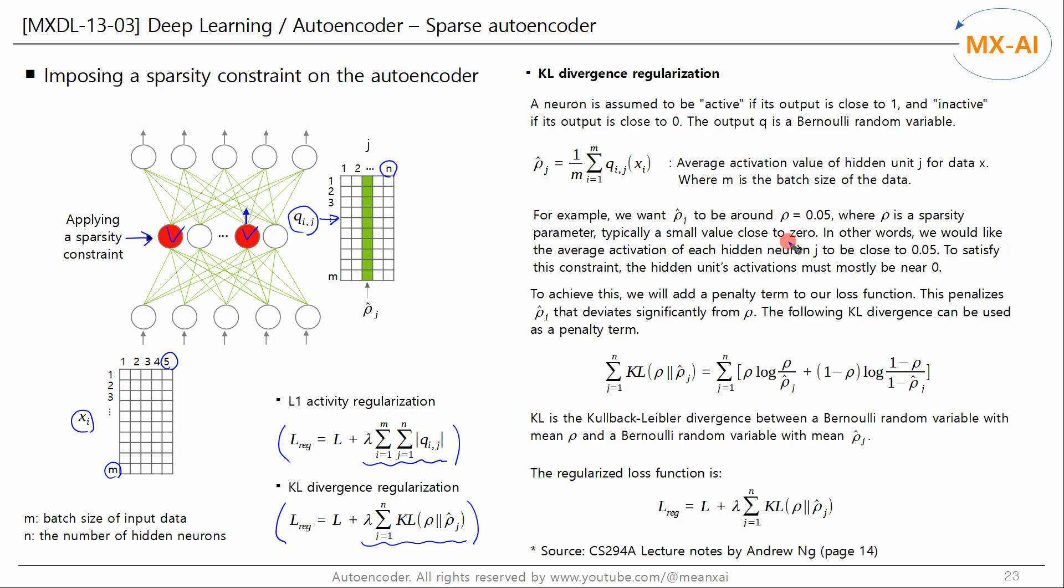For example, in this neural network, we want to limit the average of the output's Q to around 0.05. If a neuron's output is 1, we can say it is active. And if its output is 0, we can say it is inactive. That is, the output Q is a Bernoulli random variable.